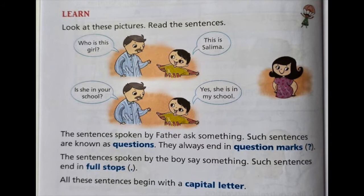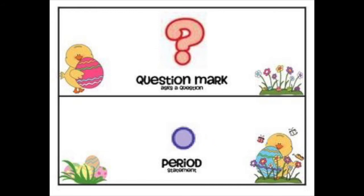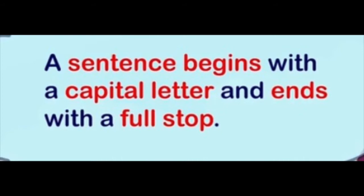Next: 'Is she in your school?' — question mark. He is asking, 'Is she in your school?' And then the girl answers, 'Yes, she is in my school.' Full stop. So children, we use a question mark whenever someone asks a question, alright? And there is a full stop when it is a statement — when someone is saying something. These both are called sentences and they have to start with a capital letter. So a sentence should start with a capital letter; if it is a question, it ends with a question mark, and if it is a statement, it ends with a full stop.